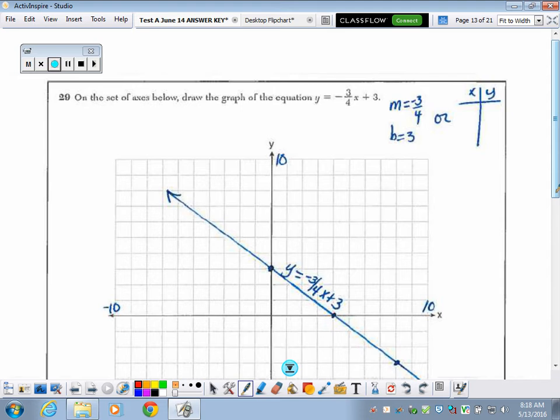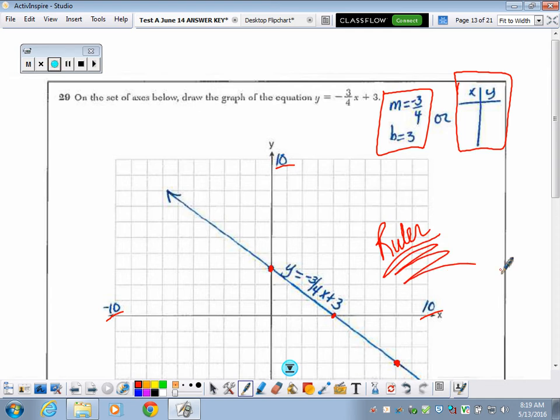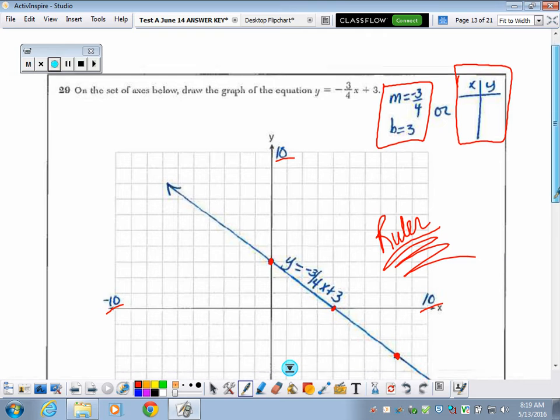Just remember, with these two-point questions, they're pretty down and dirty. They're not meant to be really long and involved. Number 29. On the set of axes below, draw the graph of this equation. Remember, whenever you graph, you have to show a method of graphing. So I chose m equals b equals because it's a linear function. Or you could have made a table of values, whatever you prefer. Again, had to establish a scale. I began at 3 on the y-axis, a slope of negative 3-4. So I went down 3 and right 4, and I did that one more time. And, of course, I used my ruler.